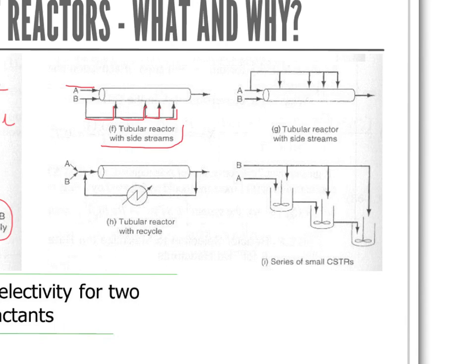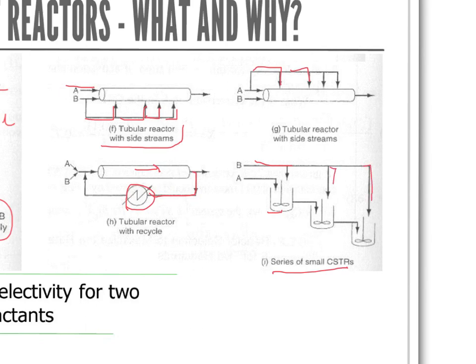There is also the case where B is supplied at the main feed and A is supplied as a side stream. Another scenario is the tubular reactor with recycle, where A and B enter the flow reactor and some portion is recycled — you can manipulate the recycle ratio. Finally, you can have a series of small CSTRs where A is put only in the first reactor and B is supplied in different side streams; this CSTR-in-series configuration behaves similarly to the tubular reactor with side streams.